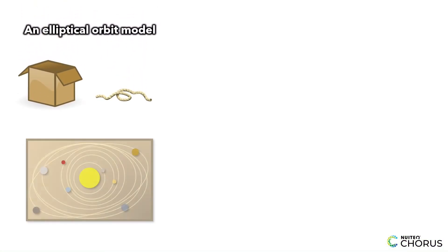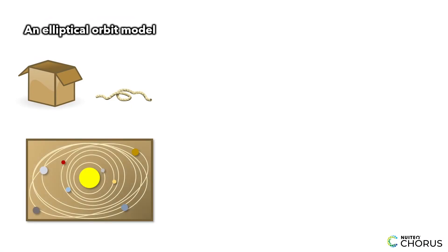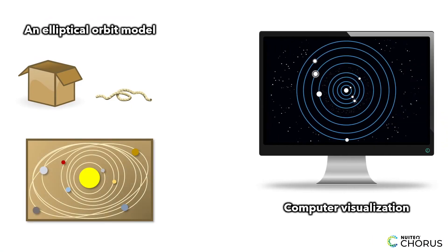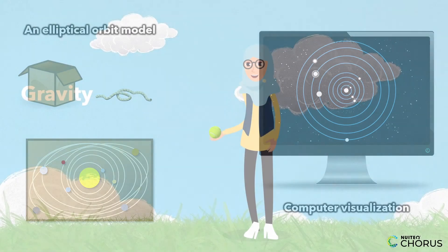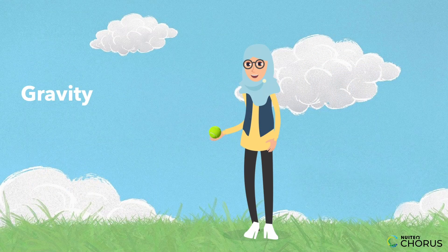If you were to build a model of this concept, you could create a simple elliptical orbit model made of cardboard and strings, or you can use computer visualizations of elliptical orbits to show how the planets move around the sun.